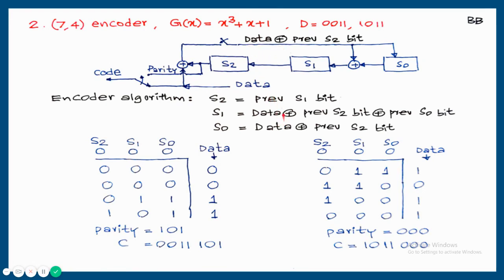From this block diagram, the algorithm is written. The feedback bit is the same as before: data plus previous S2. But now the new S2 bit is just previous S1. S1 is XOR of (data + previous S2 + previous S0). And S0 is data plus previous S2. Using this algorithm, the parity bits for the two given data sequences are 101 and 000.